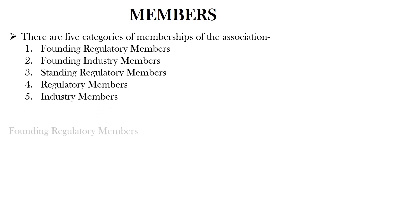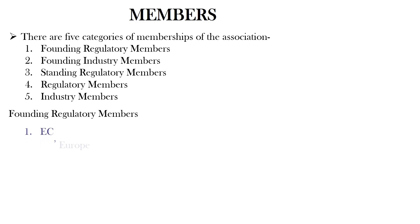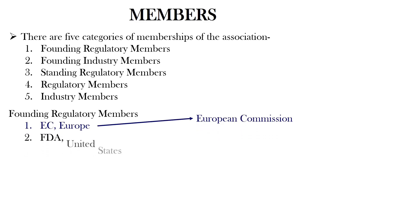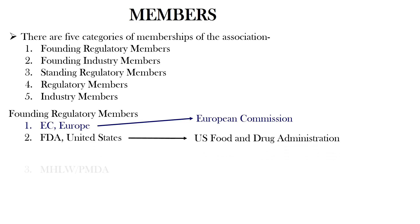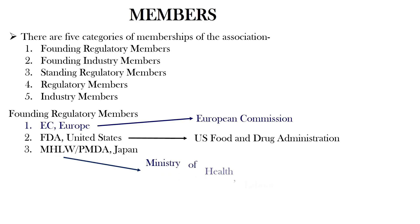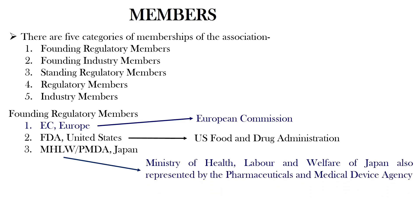Coming to the founding regulatory members: there are three founding regulatory members of ICH. These are EC Europe, that is the European Commission; FDA United States, that is U.S. Food and Drug Administration; and MHLW/PMDA Japan, that is the Ministry of Health, Labor, and Welfare of Japan, also represented by the Pharmaceutical and Medical Device Agency. These three are the founding regulatory members of ICH.